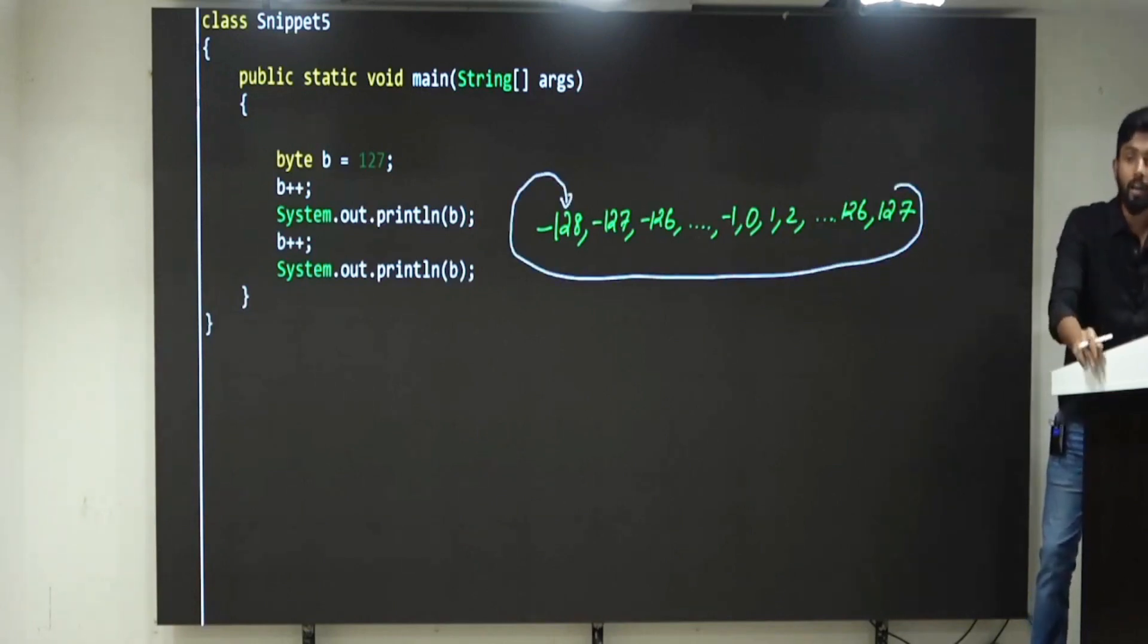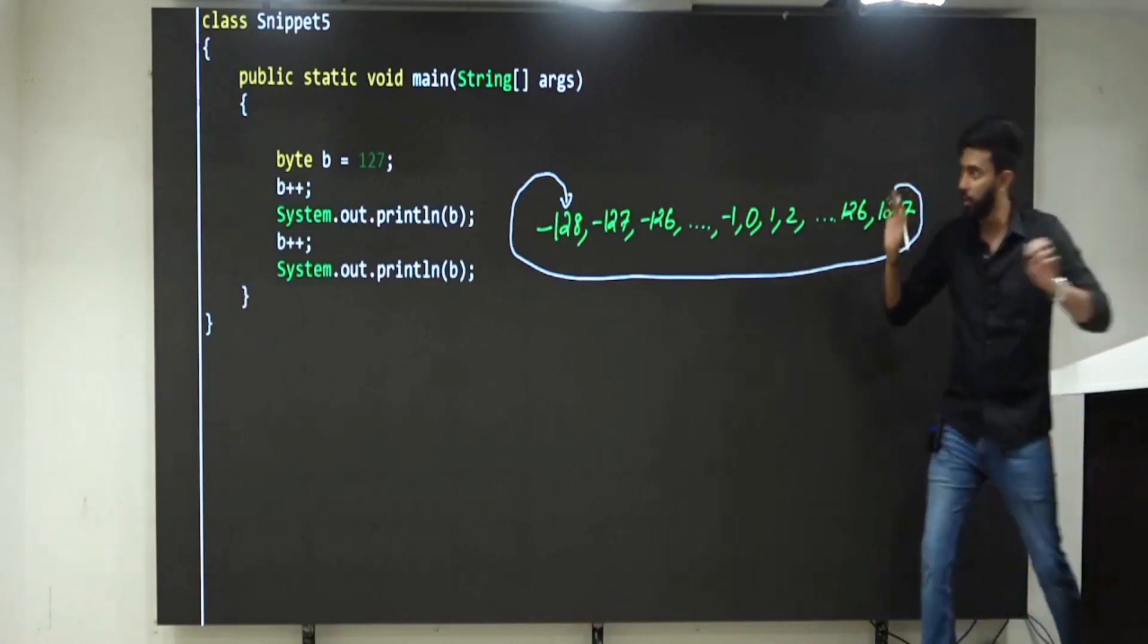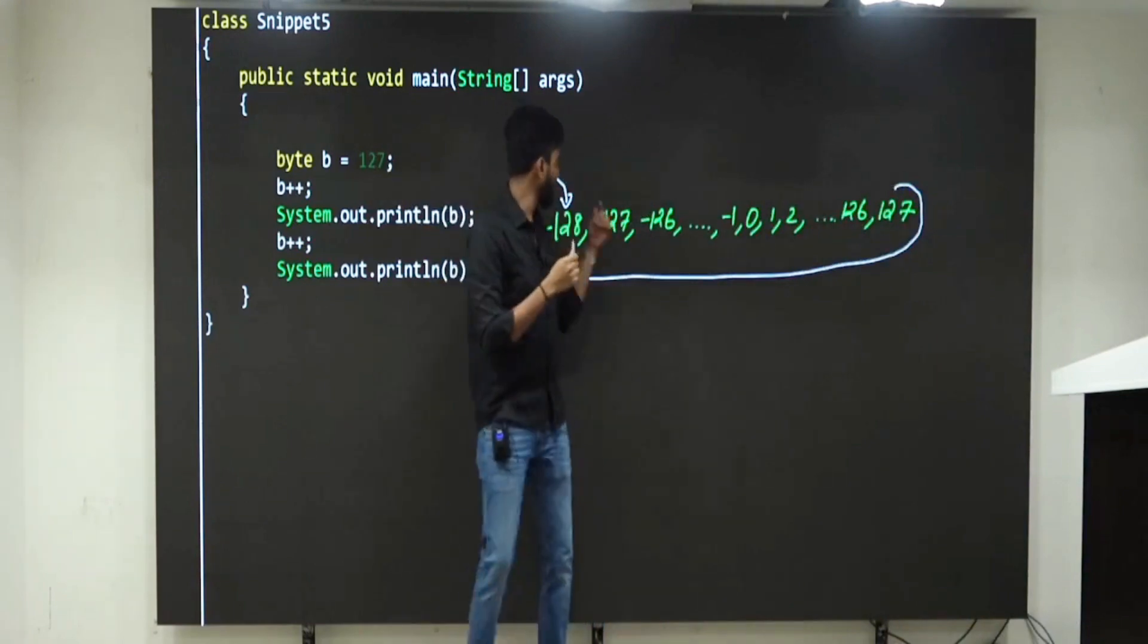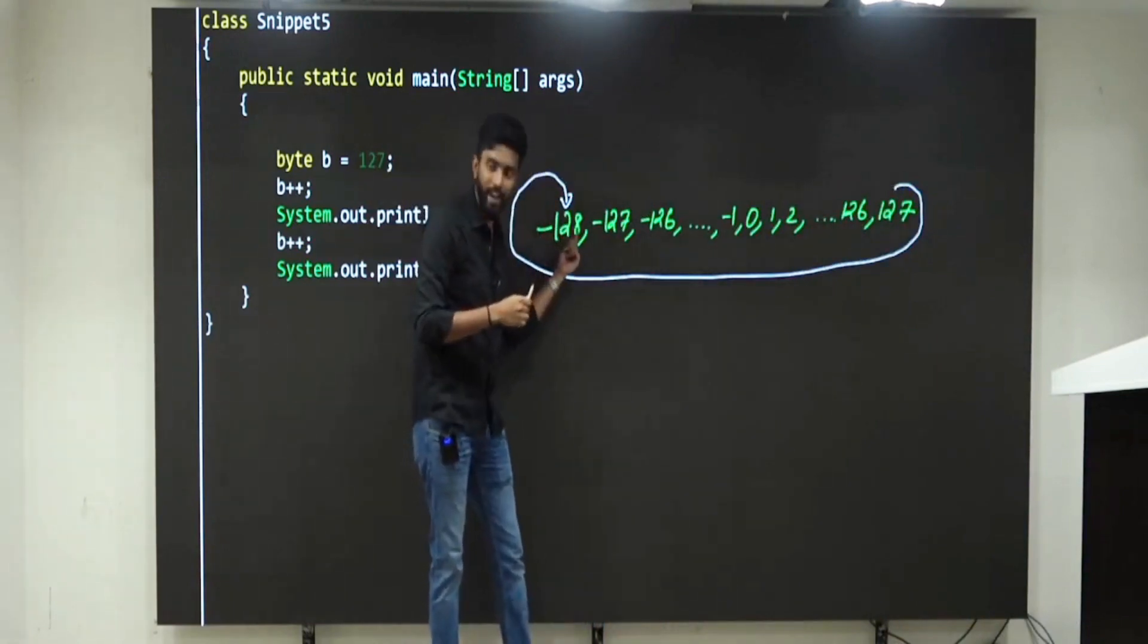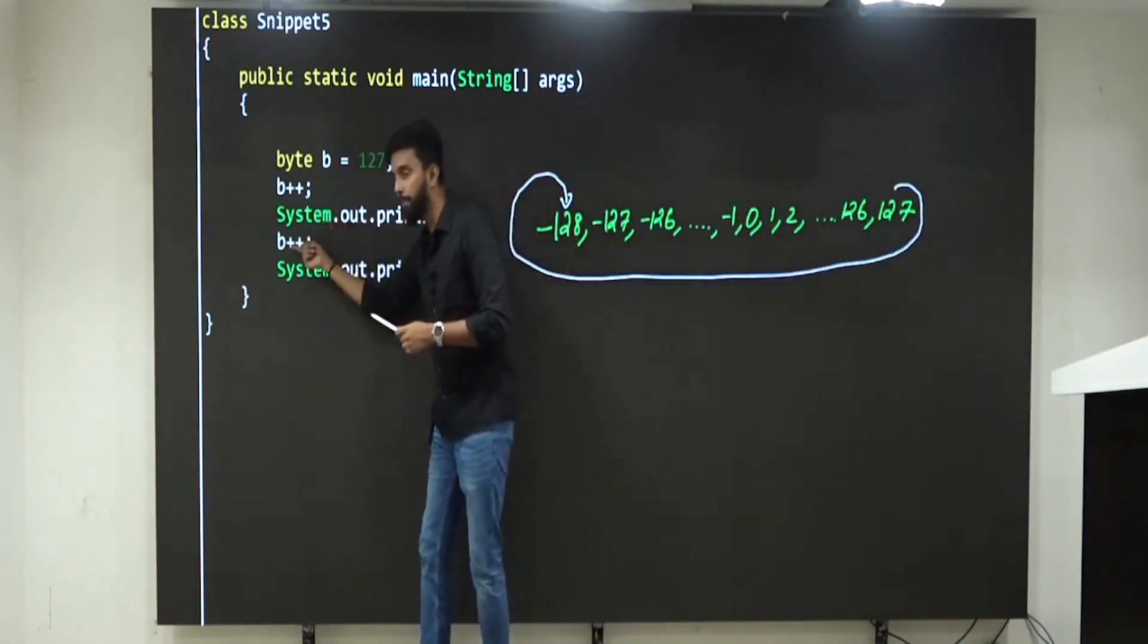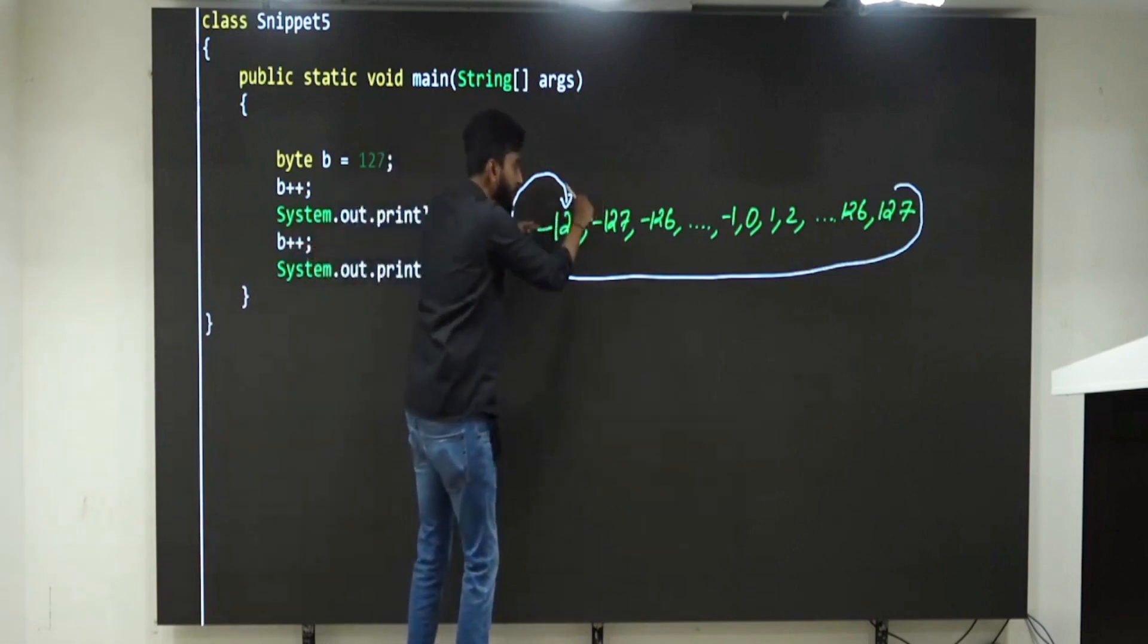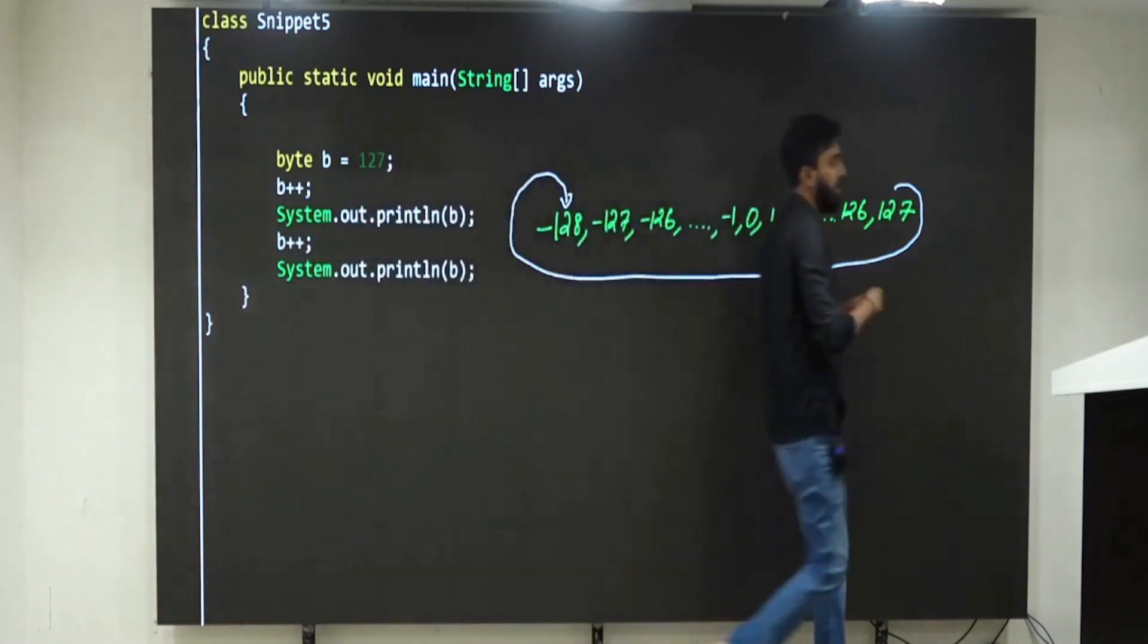And that one extra value will come here. So what did you get? Minus 128. Very good. Which means now what is inside b is not 127, what is inside b is minus 128. Now next line, b plus plus. Minus 128 plus 1 is how much? Minus 127. Very good.